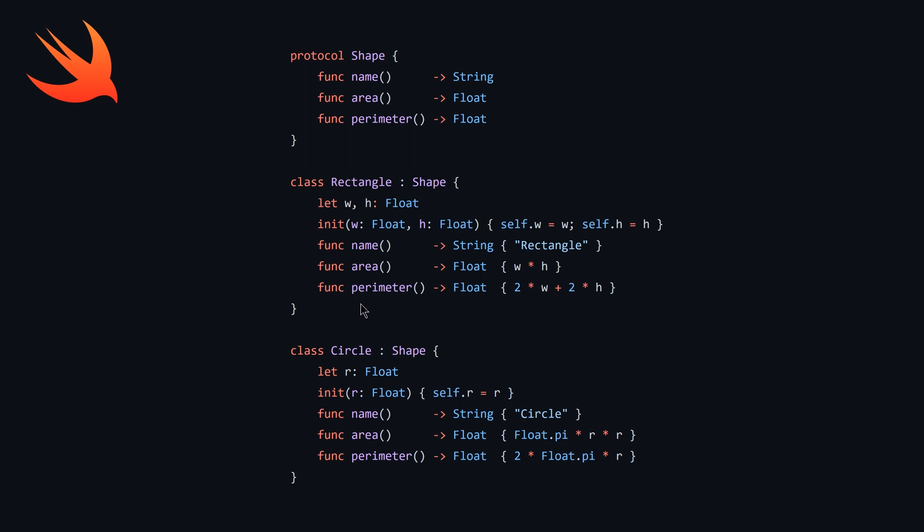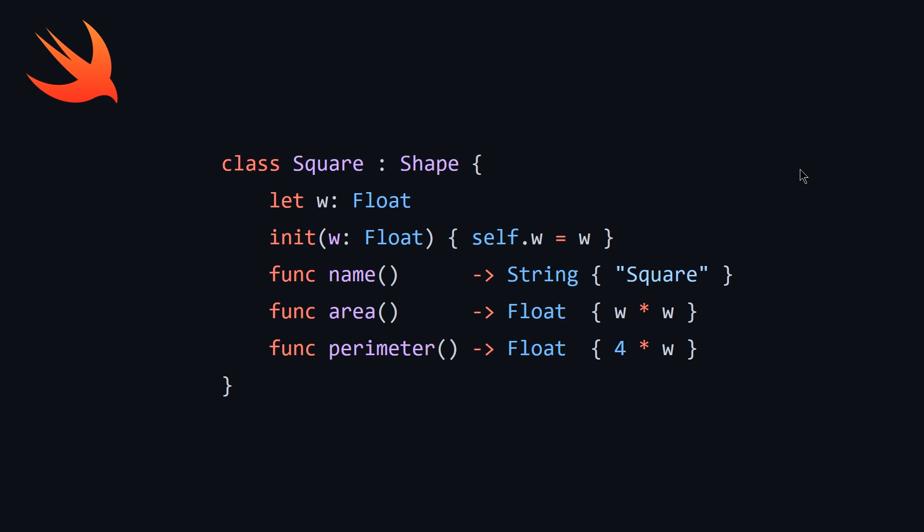So question three asks you to implement circumference for circle that's not included in the protocol. So here, if we wanted, we could just delete the three perimeters and then rename perimeter for circle to circumference, and then just delete perimeter here and in the protocol, and then this would work. And then question number four asks you to extend this example to include square. So here, you just basically do the exact same thing we've done for circle and rectangle, except we are redefining the three functions. So name is going to return square, area is just going to be the width squared, or the length of the side squared, and the perimeter is just going to be four times the width.